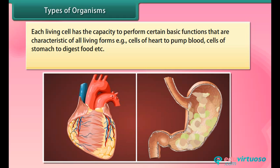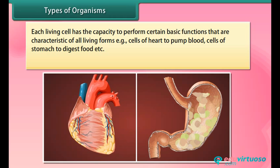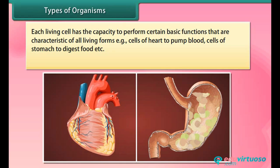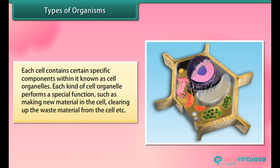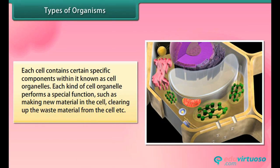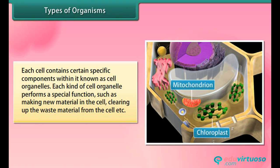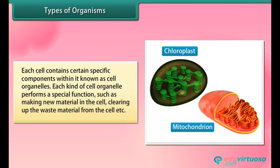Each living cell has the capacity to perform certain basic functions that are characteristic of all living forms — cells of the heart pump blood, cells of the stomach digest food. Each cell contains certain specific components within it known as cell organelles. Each kind of cell organelle performs a special function, such as making new material in the cell or clearing up waste material from the cell.